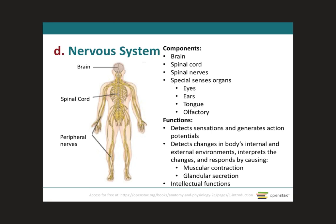The nervous system components are the brain, the spinal cord — which is a continuation of the brain running down the middle — the spinal nerves that exit from the spinal cord, and the special sense organs: the eyes, ears, tongue, and olfactory system, for vision, hearing, taste, and smell. In terms of function, specific sensory receptors detect sensation and generate an action potential that carries information to the central nervous system, which responds via muscle contraction or glandular secretion. Another function is intellectual processing. More details in module ten.